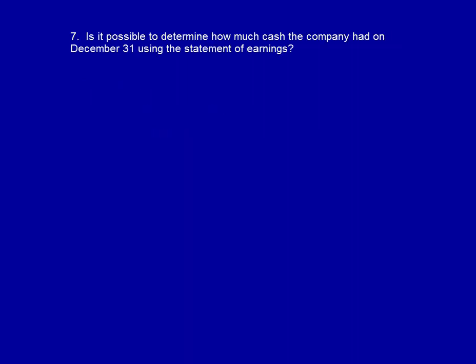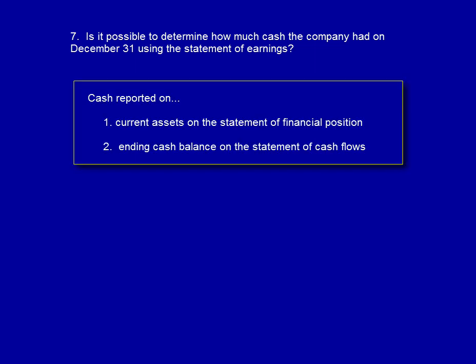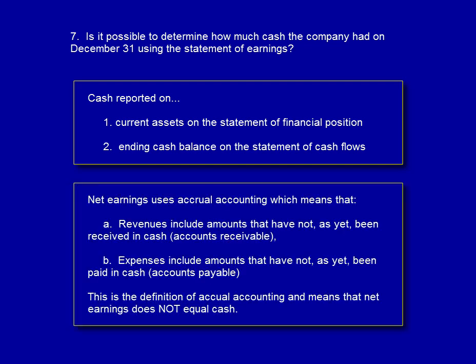Is it possible to determine how much cash the company had on December 31st? The answer is no. The statement of earnings does not report or make it possible to determine the ending cash balance. Cash is reported in two places: the statement of financial position under current assets, and on the statement of cash flows as the final ending balance. The $38,880 in net earnings is an accrual number, which means it includes revenues not yet collected in cash and expenses not yet paid. Therefore, net earnings is not equal to cash.